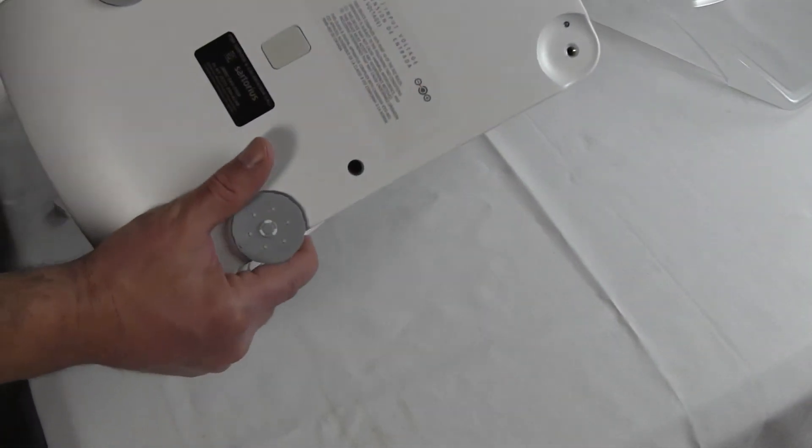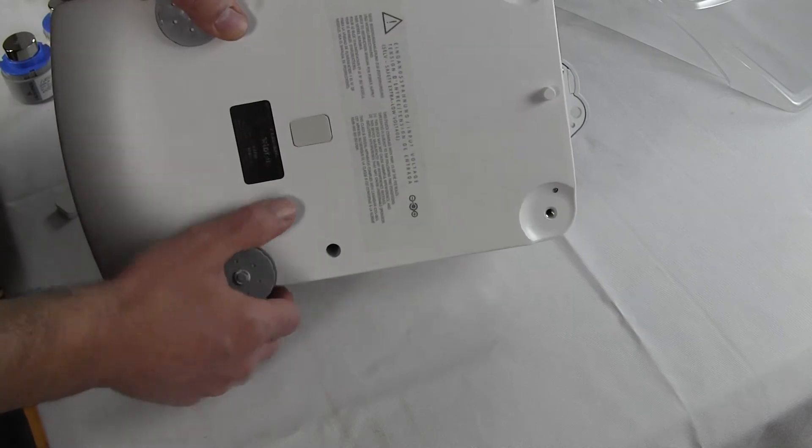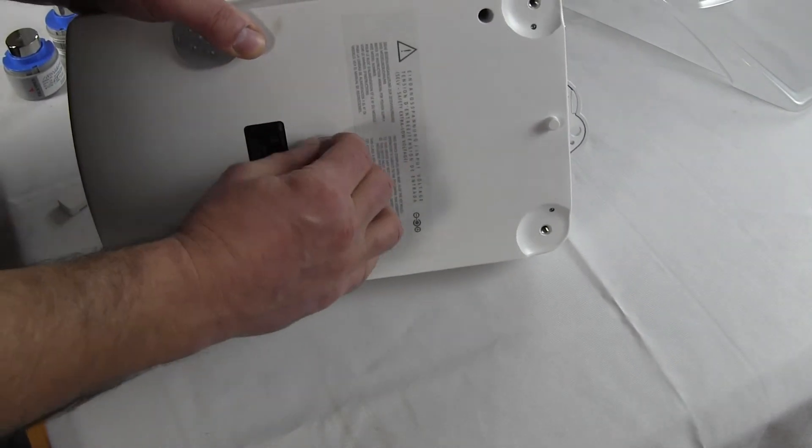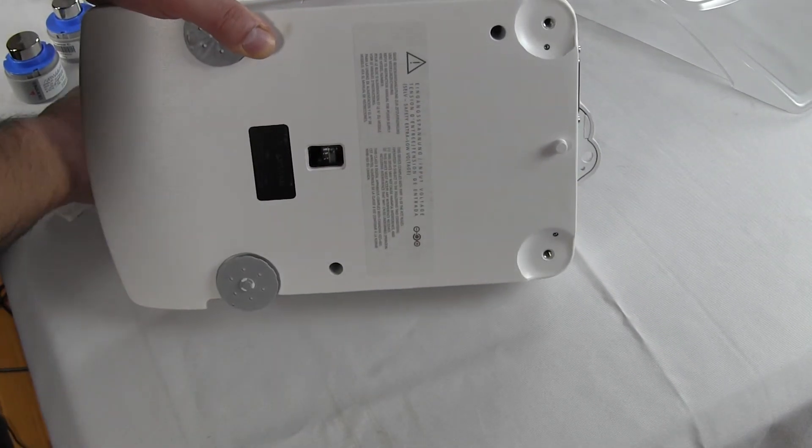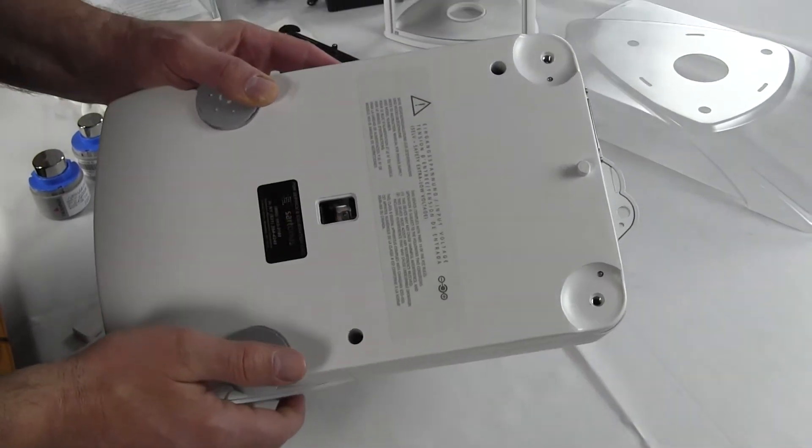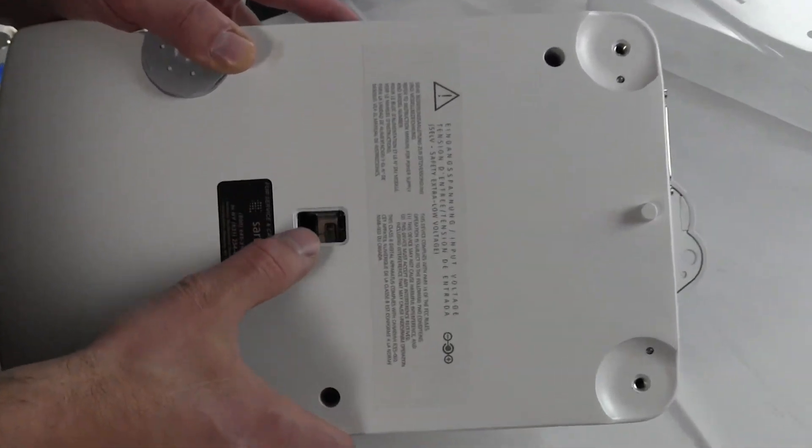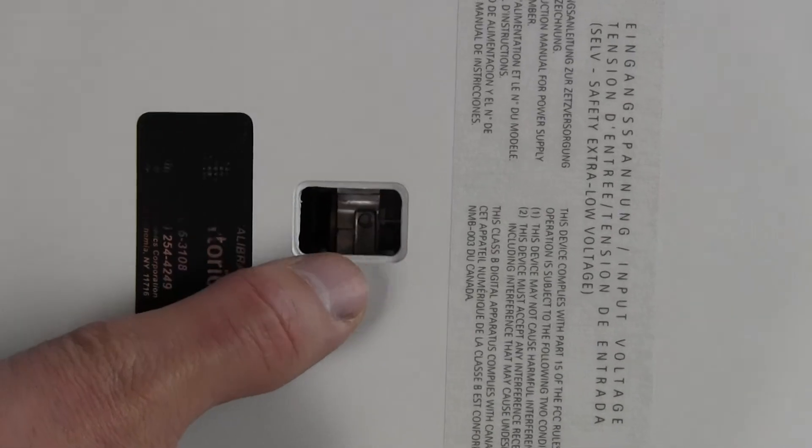On the bottom of the balance that I was speaking about before is this little port here. This port is for if you wanted to weigh magnetic material. There's an underhook right here. And one would hang a wire and you could actually weigh hot material or magnetic material.